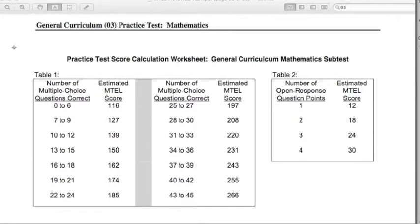Now we're going to take a close look, a detailed look at the Practice Test Score Calculation Worksheet on the General Curriculum Mathematics Subtest. That's a long title, and it's located at the end of your test, and it has these two tables, Table 1 and Table 2. Basically, we have the number of correct on the multiple choice, and your score, and the number of points you get on the open response, and your score. I want to go over some case studies.